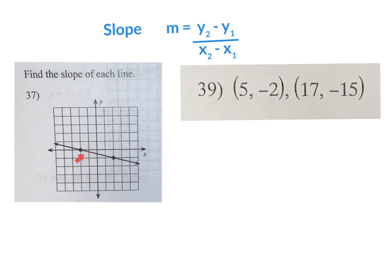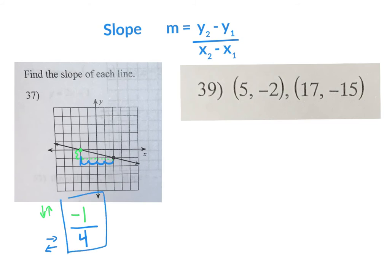The graph asks for slope. You can use your slope formula — Y2 minus Y1 over X2 minus X1 — or with a graph you can just walk it. Start at the first point. I have to go down 1 to reach the second point — that's my numerator. Then I go over 1, 2, 3, 4 to the right — that's my denominator. Down is negative, up is positive; right is positive, left is negative. So my slope is negative one-fourth.